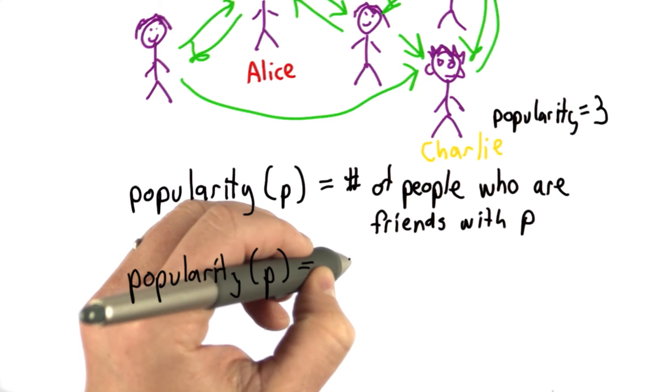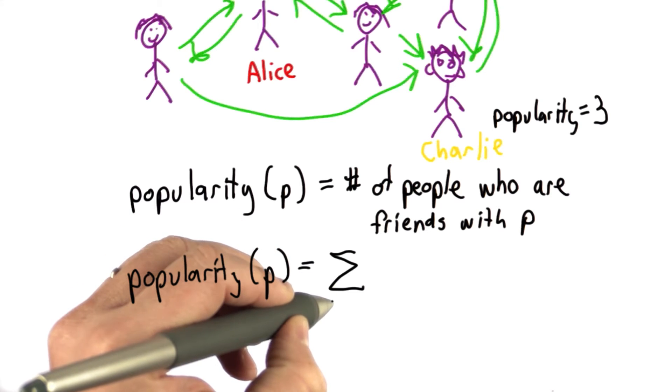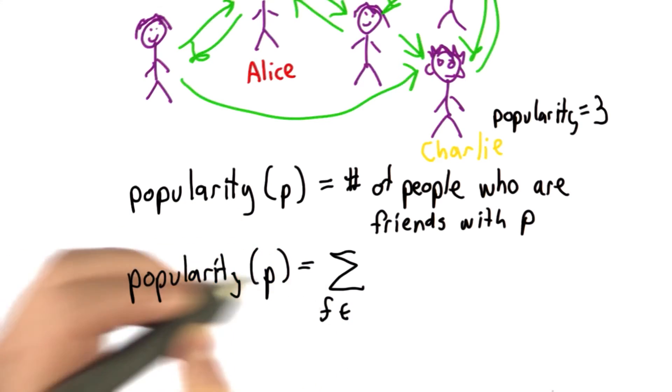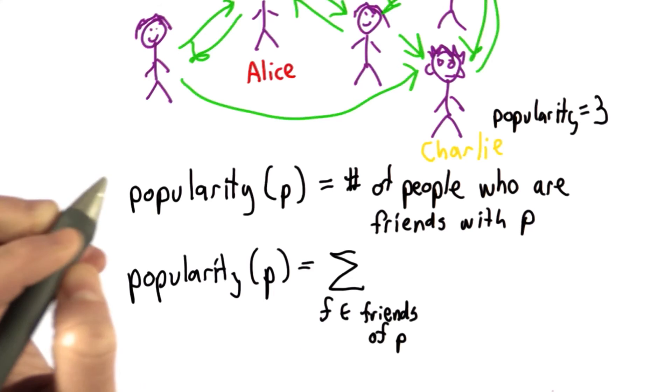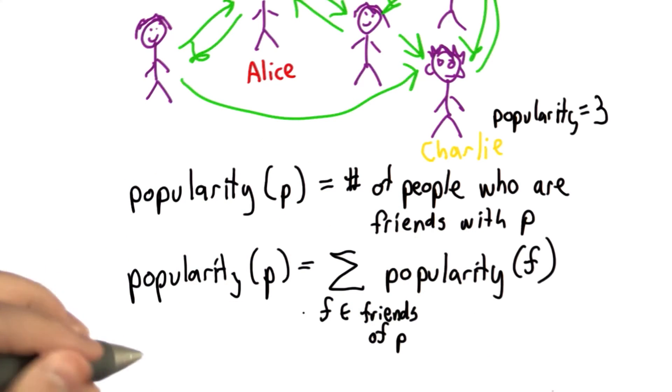So we can write that in a mathematical way. So using the sigma means to sum up. We're going to take each friend that is in the friends of P, and we're going to sum up the popularity score of the friends. If the mathematical notation is unfamiliar to you, we could also write this as pseudo Python code.